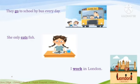Now we can see more examples for habitual actions. First: they go to school by bus every day. Second: she only eats fish. Third: I work in London. All these sentences show habitual actions.